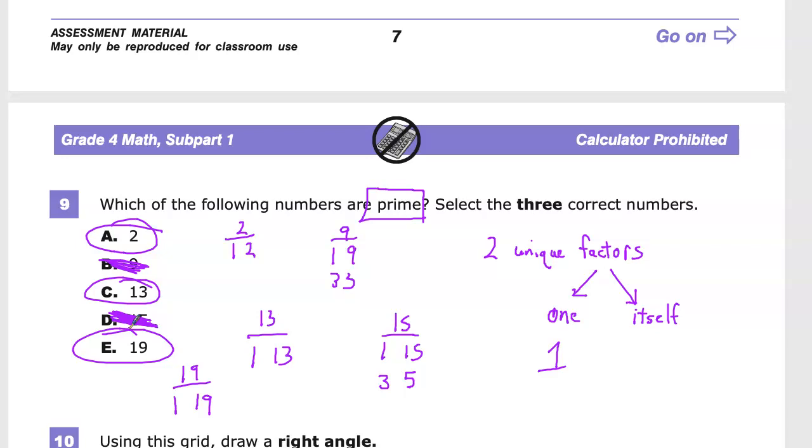But remember, for your prime, you need two unique factors. One has to be one of those factors, and the number itself has to be the other factor. Otherwise, it is not a prime number.